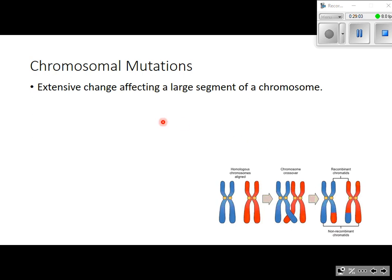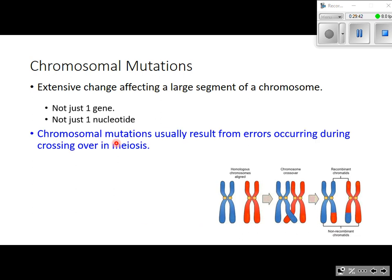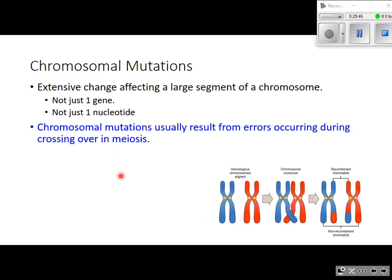Now we're going to shift gears and talk about the other major category of mutations: chromosomal mutations. If it's a point mutation, it only affects one single gene on one chromosome. But if it's a chromosomal mutation, it is an extensive change affecting a large segment of a chromosome — not just one gene, but multiple genes. Chromosomal mutations are not usually mistakes during DNA replication; rather, they are errors that occur during crossing over in meiosis.